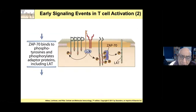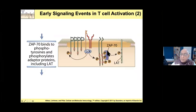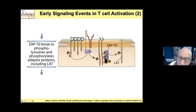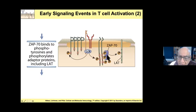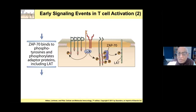Signaling is initiated in the T cell receptor as follows: CD4 or CD8 binds to the side of the MHC, the MHC-peptide is seen by the T cell receptor, and this brings LCK close to the ITAMs. LCK phosphorylates the ITAMs. Then ZAP70 - the T cell equivalent of Syk, homologous to Syk - gets recruited to the two phosphorylated tyrosines via its two SH2 domains. ZAP70 gets further phosphorylated and activated by LCK, and the activated ZAP70 then phosphorylates tyrosines on adapters to drive signaling.